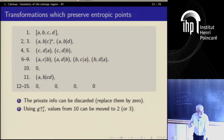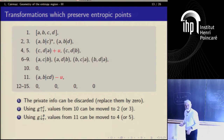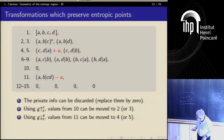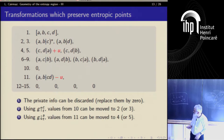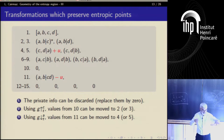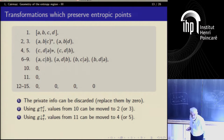There's a typo — this t should be u or this u should be t, same number. Using the other type of reduction we can move weights from one coordinate to another. This coordinate decreases while another coordinate up there increases. So the second step gets us from 15 coordinates down to nine — that's much better.